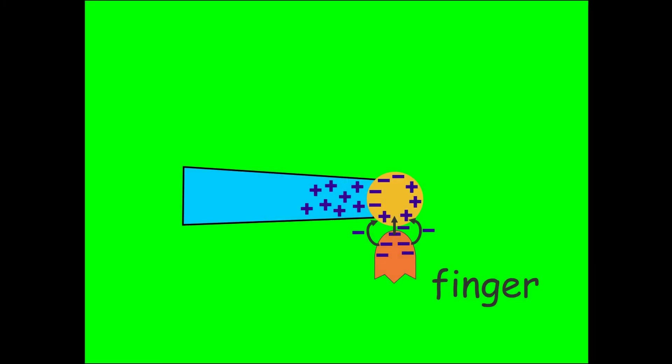During the experiment I slowly approach the ball with my finger. At some stage electrons jump from my finger onto the ball. The ball is now negatively charged and will no longer be attracted by my finger. It is now attracted by the positively charged plexiglass and swings towards it.